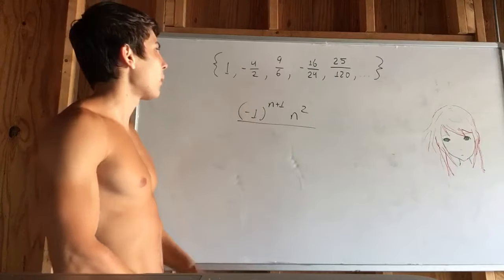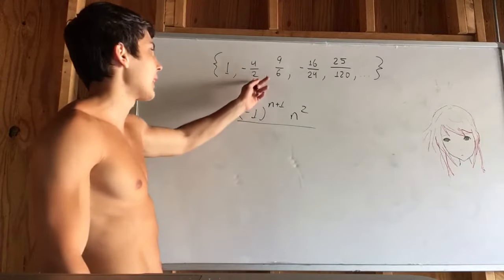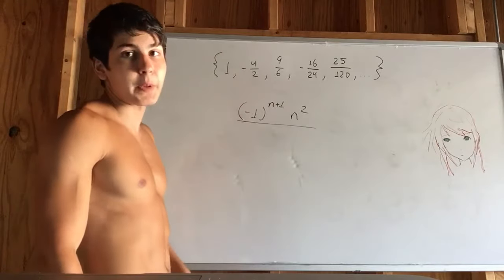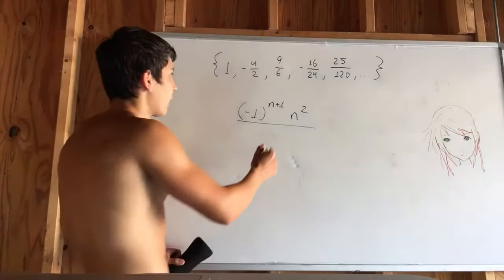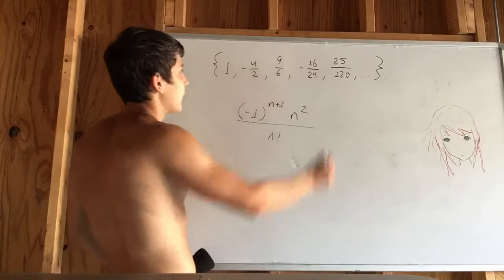In our denominator, we have another pattern that they're throwing at us. This is n factorial. It's n factorial, it's a pattern that you should recognize, 2, 6, 24, 120.